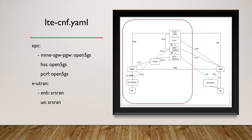For the LTE network functions — the EPC, including the MME, S-Gateway, P-Gateway — I'm using Open5GS. The same for the HSS and PCRF, also using Open5GS. For the E-UTRAN or the RAN network, the eNodeB and the UE is from SRS RAN. As you can see on the screen, the whole LTE network is on the left-hand side of the picture. That's the brief information for how we set up the lab.